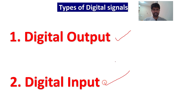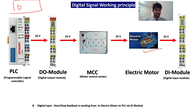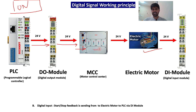Now we will see how digital signals work. In digital signals we will have digital output and digital input. I have one motor here — I want to make it on and I want to know whether the motor is on or off when I give command to it. From the HMI, I give an on command to the motor. Then the PLC will give command via the DO module — 24 volts will go to the MCC, there will be a relay, it will activate that relay, and from the MCC power supply will go to the motor.